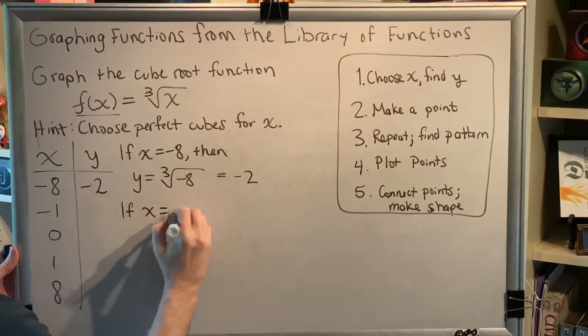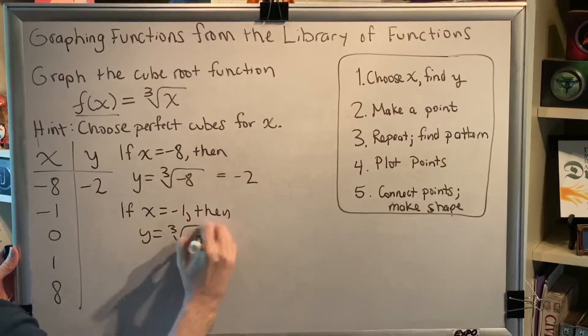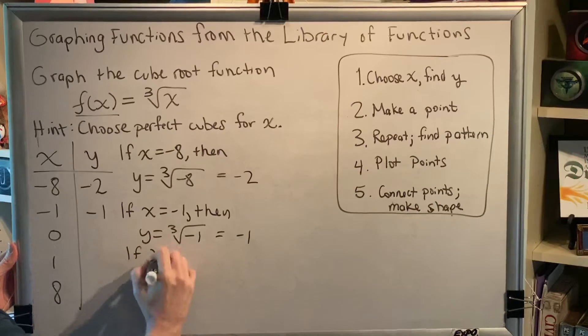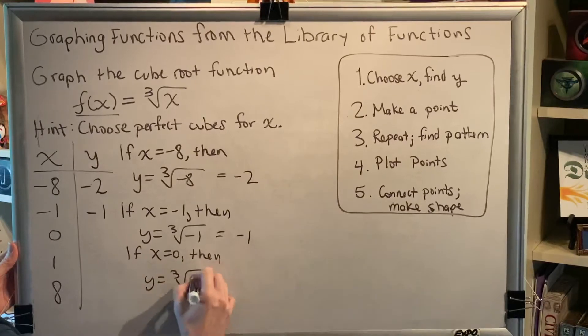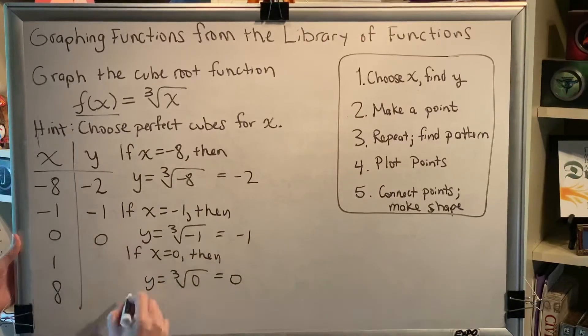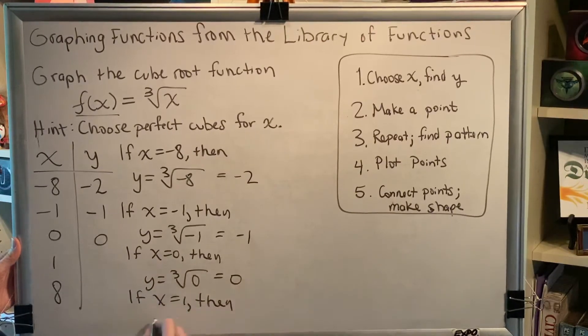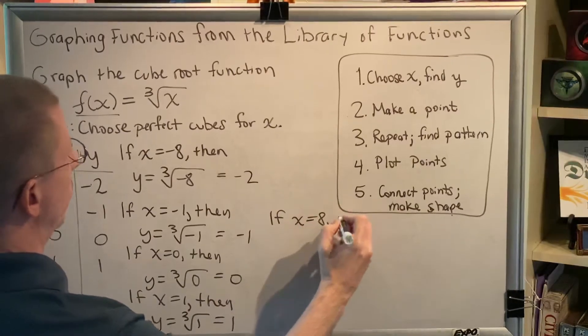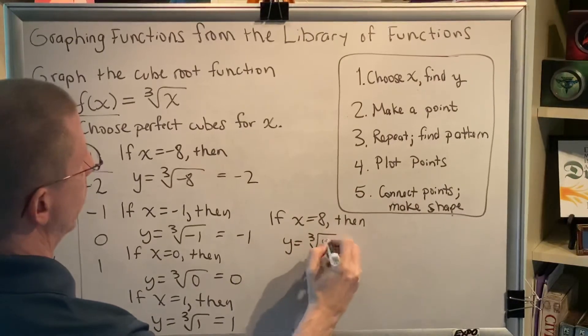Let's try the next one. If x equals negative 1, then y equals the cube root of negative 1, which equals negative 1. If x equals 0, then y equals the cube root of 0, which is 0. If x equals 1, then y equals the cube root of 1, which is 1. And finally, if x equals 8, then y equals the cube root of 8, which is 2.